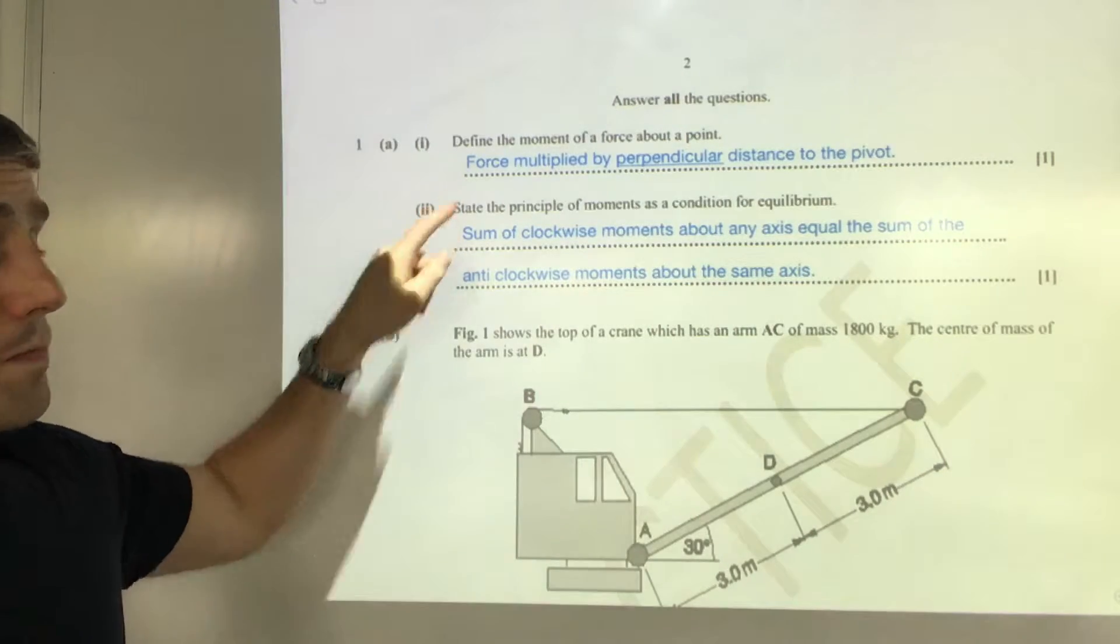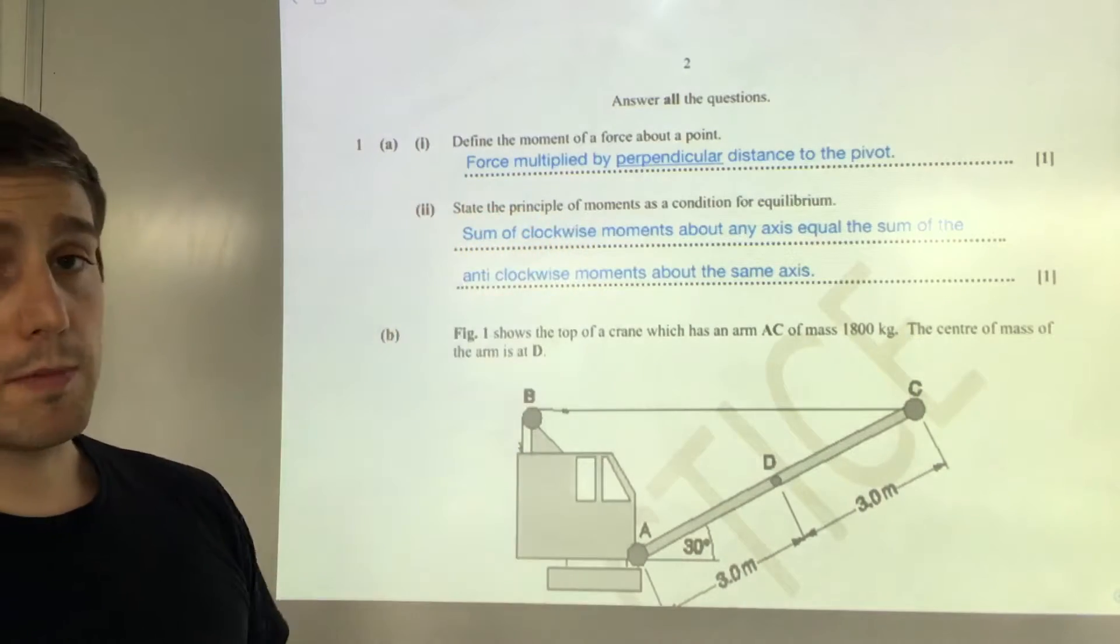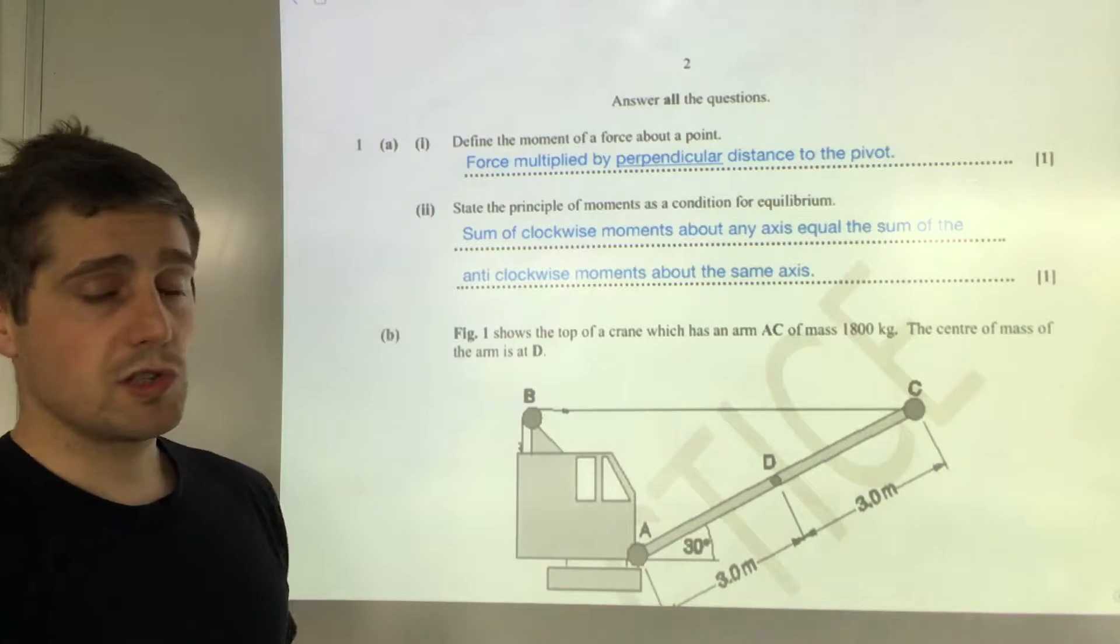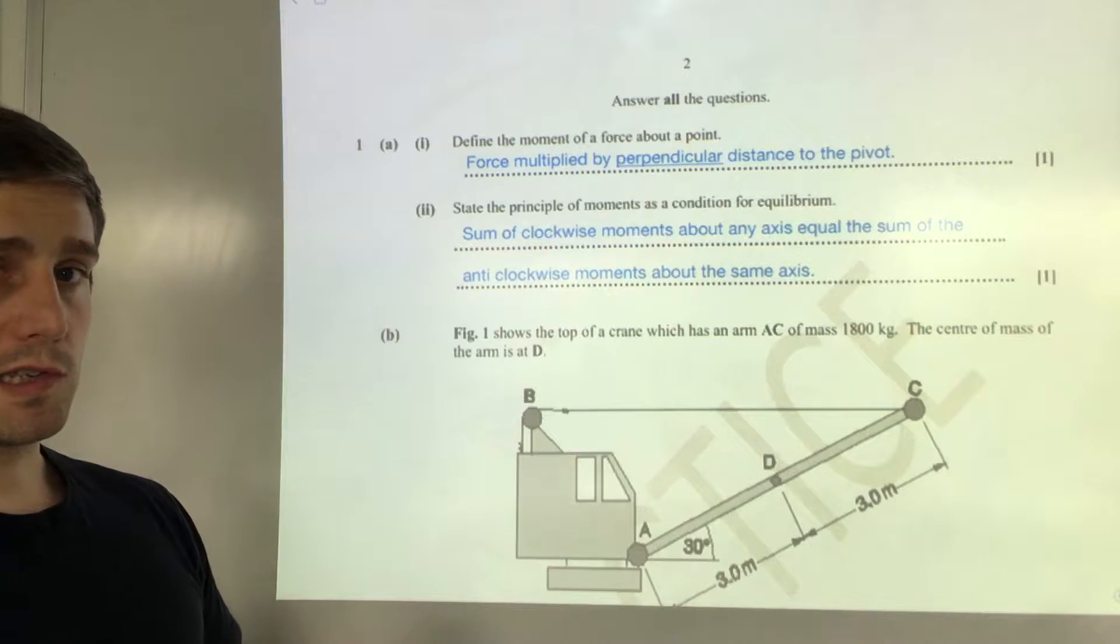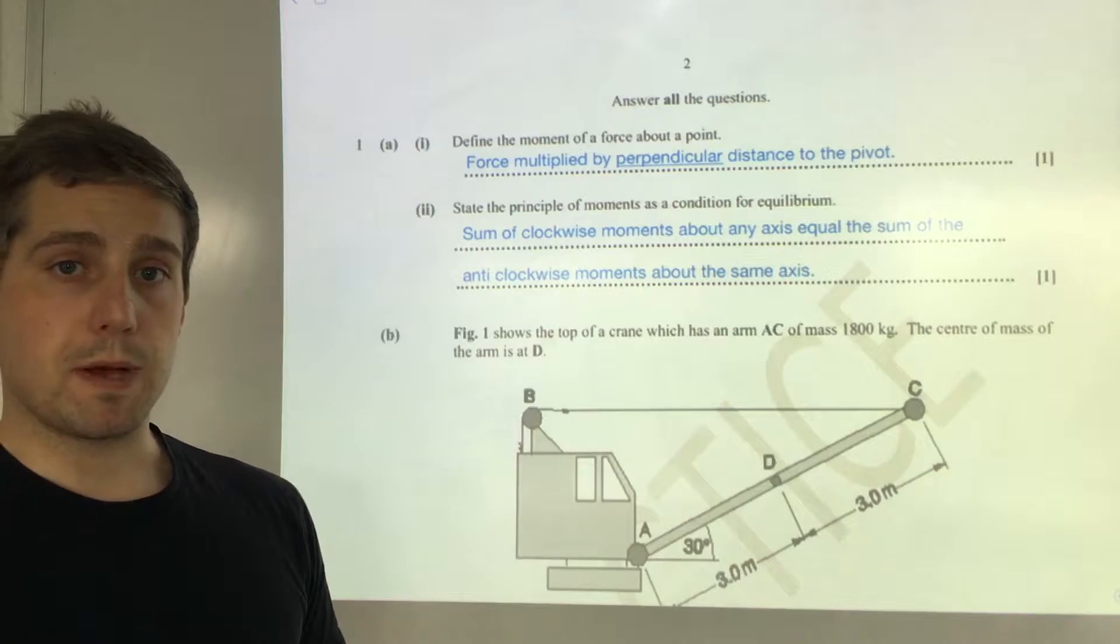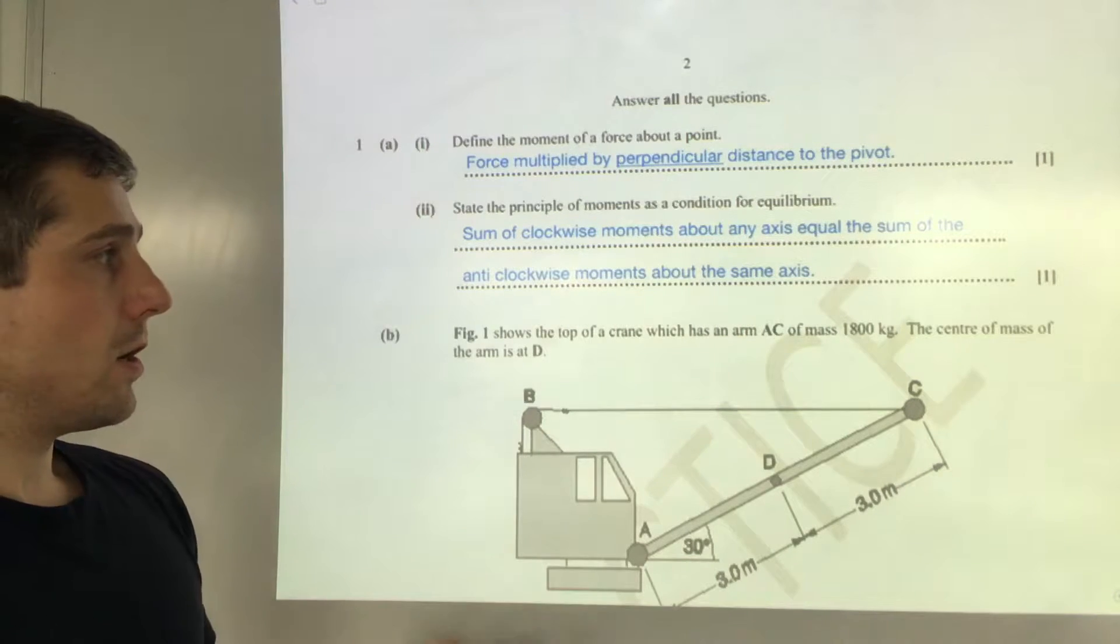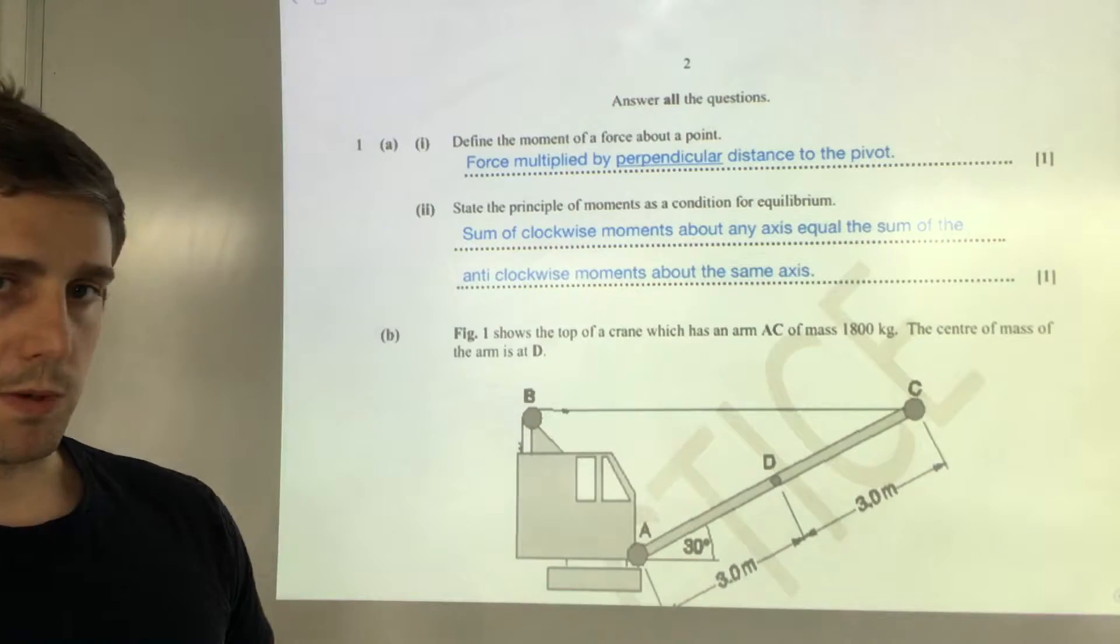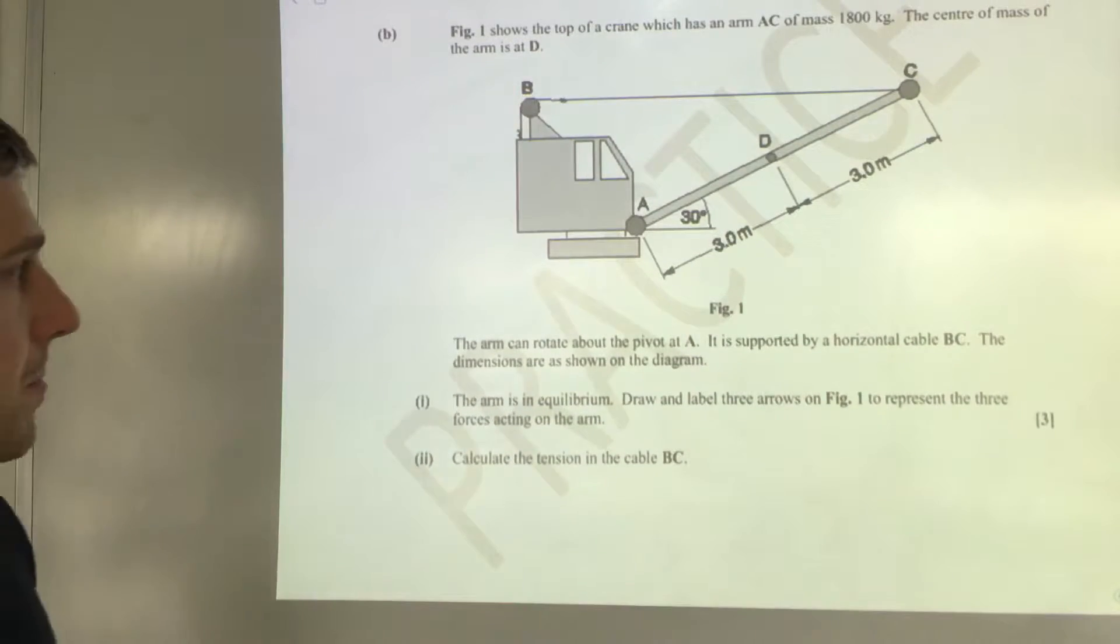Part one asks us to define the moment of the force about a point, which is force multiplied by the perpendicular distance to the pivot. Question two asks us to state the principle of moments for a system in equilibrium. For that we need to write that the sum of the clockwise moments about an axis is equal to the sum of the anti-clockwise moments about the same axis.